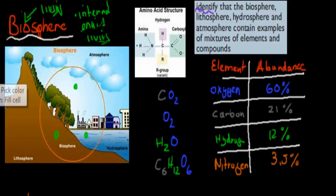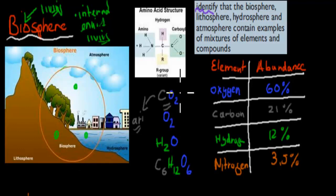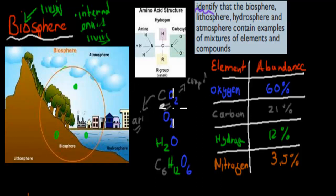For example, we can find carbon dioxide in the biosphere — carbon dioxide that's in the air we breathe, and that trees also need to be able to make sugar. This is an example of a compound, because it has two different types of atoms: carbon and oxygen atoms, which makes it a compound. In this case, it's a molecular compound because they're bonded together.